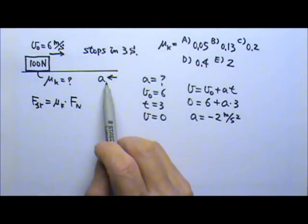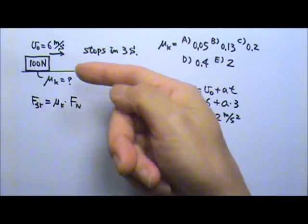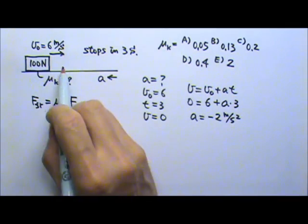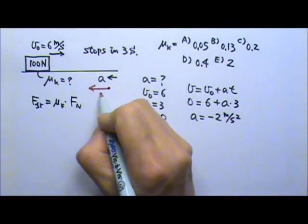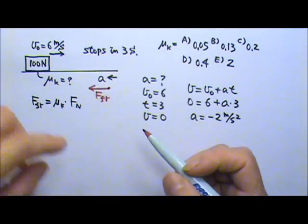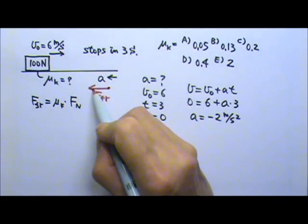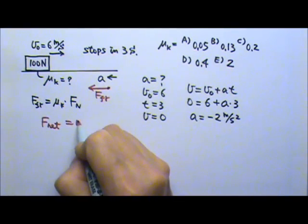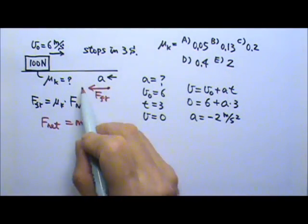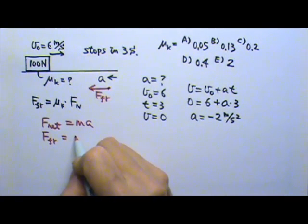So now let's work on the forces. We have the direction of acceleration. Now we need to draw the force diagram. We only need the forces in the horizontal direction because the acceleration is in the horizontal direction. So which horizontal force is acting on the box? That would be friction. Because we do have mg and normal force, but they are in the vertical direction. Friction is the only one that can be in the horizontal direction. So now let's write the net force equals ma.